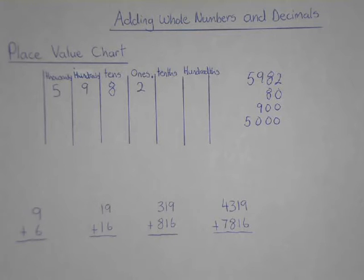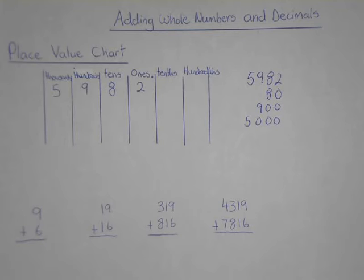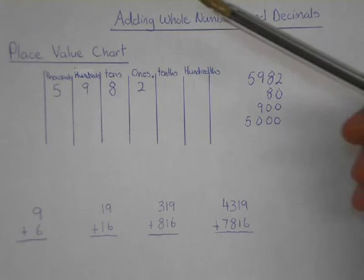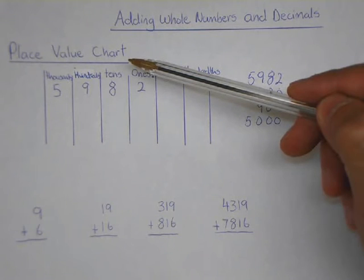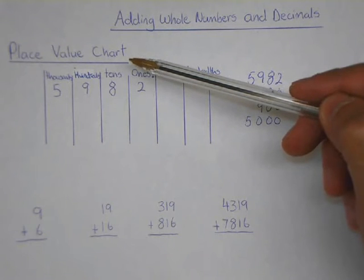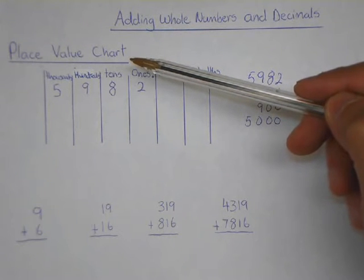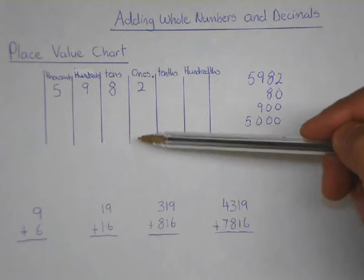Welcome to adding whole numbers and decimals. Today we're going to be going through how to add whole numbers and how to add decimals together, and some of the key concepts behind them. Before we get into that, we have to understand what a place value chart is. A place value chart is a simple mechanism to distribute numbers evenly so you can understand what the breakdown of each number is.